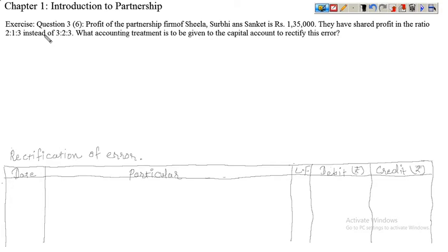They shared profit in the ratio 2:1:3, but instead of 3:2:3 — basically unko jo correct ratio tha woh 3:2:3 ke andar karna tha. What accounting treatment is to be given to the capital account to rectify this error?